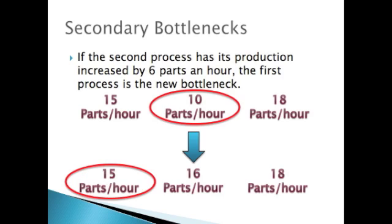There are also secondary bottlenecks. Secondary bottlenecks are your second-worst processes in your production cell in terms of output. Your main bottleneck has the lowest output in the entire production line; a secondary bottleneck has the second lowest. Say your first station makes 15 parts an hour, your second makes 10, and your third makes 18. The main bottleneck is the second station. But if you do some process improvement and increase that station to 16, giving you 15, 16, and 18 parts an hour, the new bottleneck becomes the first station — it was the secondary bottleneck all along.